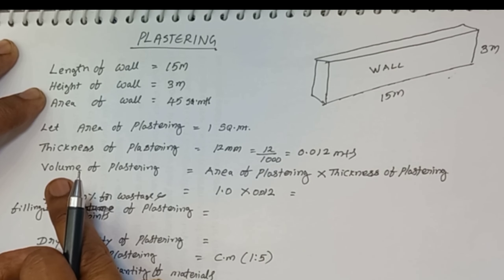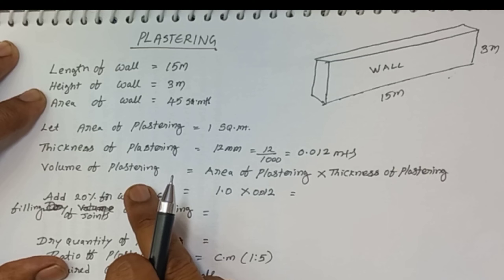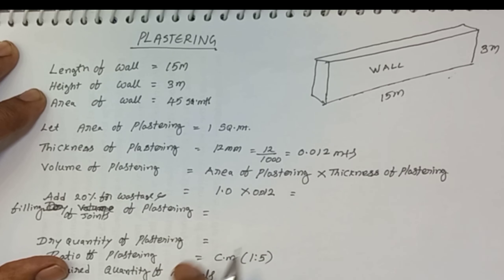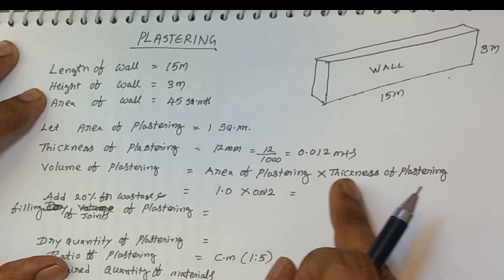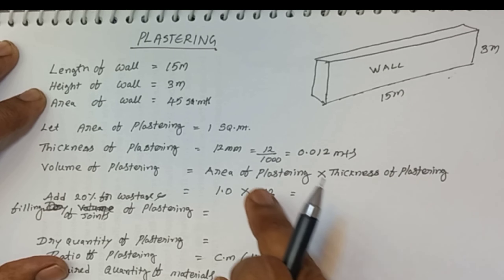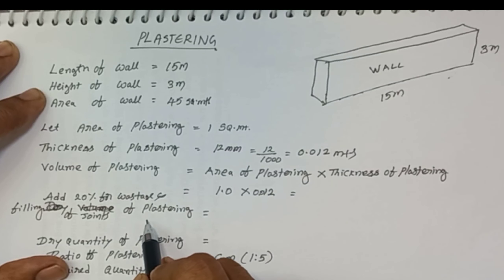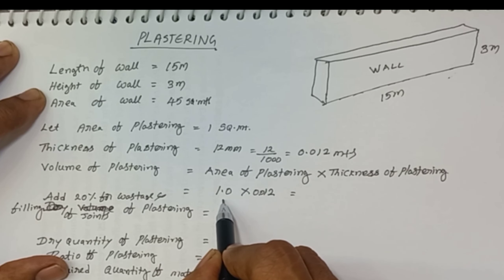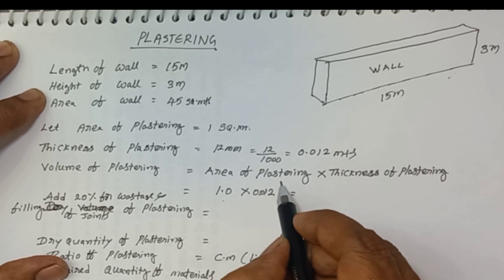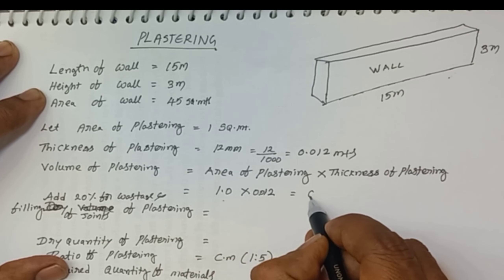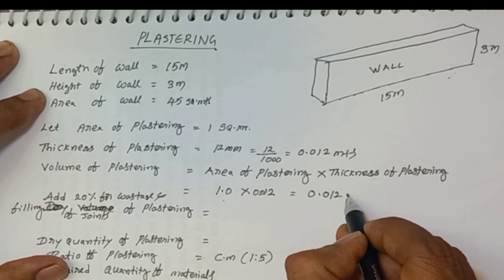Now we have to find the volume of plastering. Volume equals area multiplied by thickness. Area of plastering is 1 square meter, thickness of plastering is 0.012 meters. So the volume of plastering is 1 × 0.012 = 0.012 cubic meters.